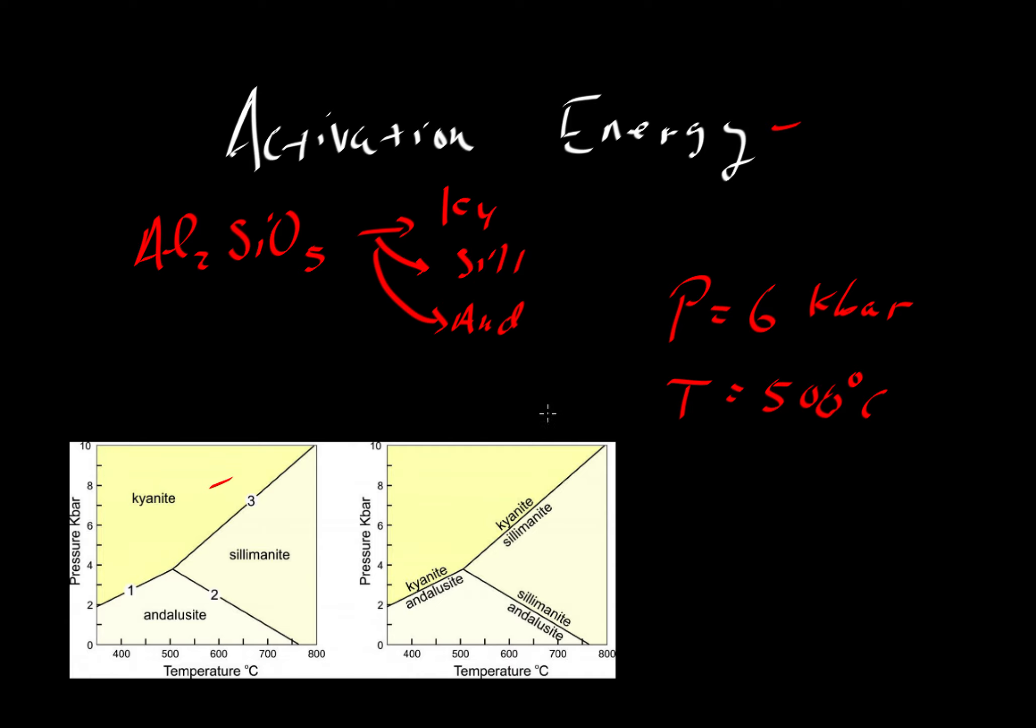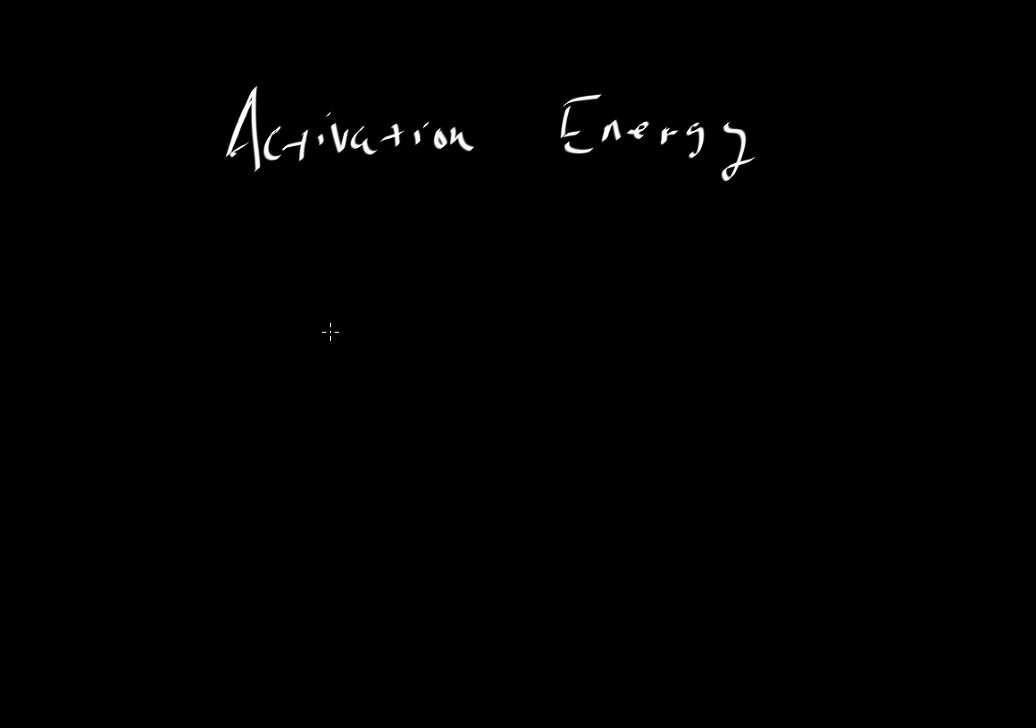Pause the video and tell me what the stable phase would be of Al2SiO5 - kyanite, sillimanite, or andalusite. At this set of PT conditions, here's six kilobars, 500 degrees about there, those conditions intersect in the kyanite field, meaning kyanite is stable. Let's consider the case of sillimanite transforming into kyanite. Say we had sillimanite in a metamorphic rock experiencing an increase in pressure and decrease in temperature, forcing it into the kyanite stability field.